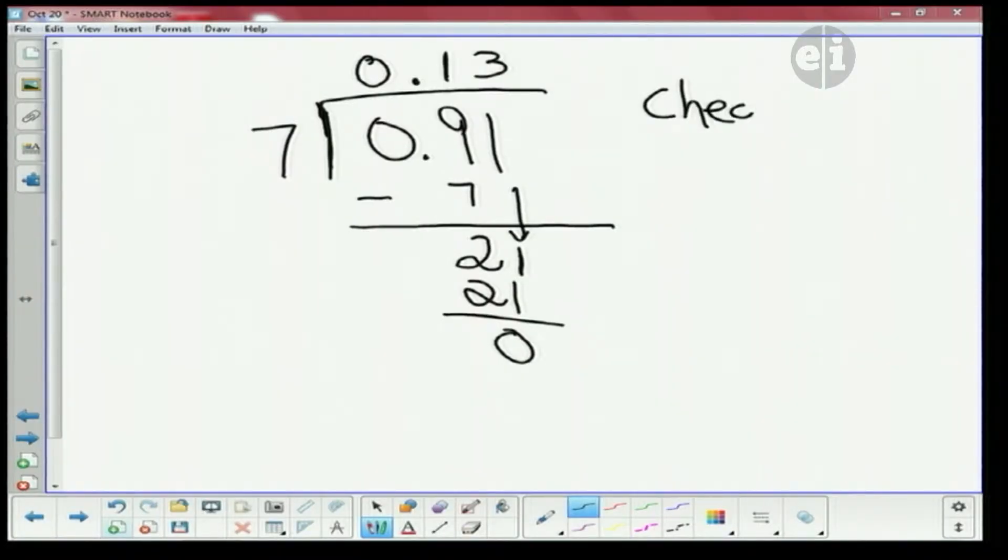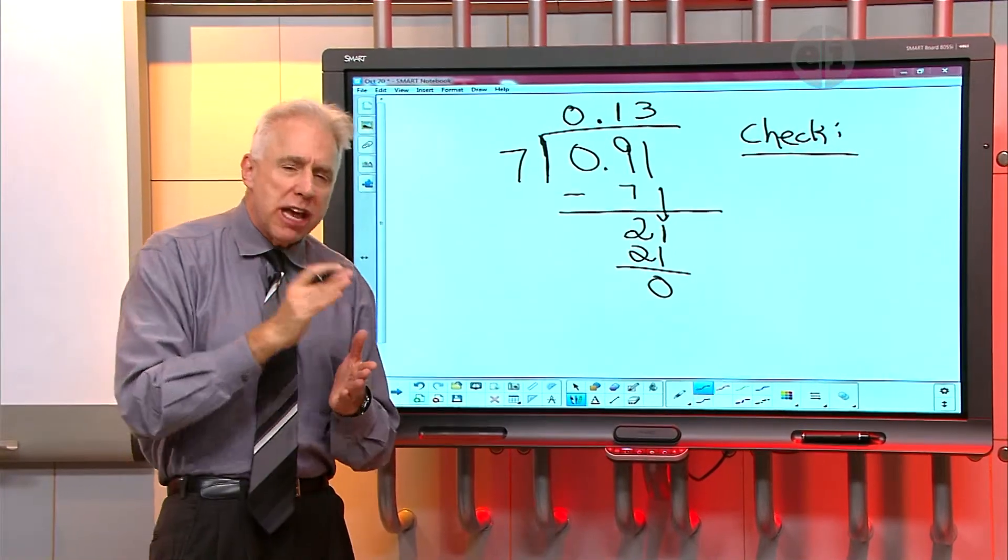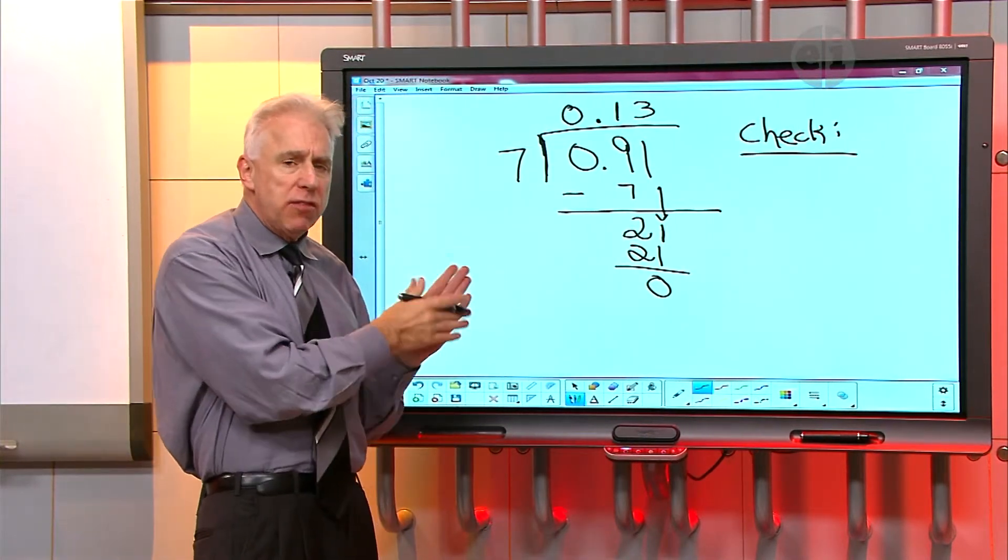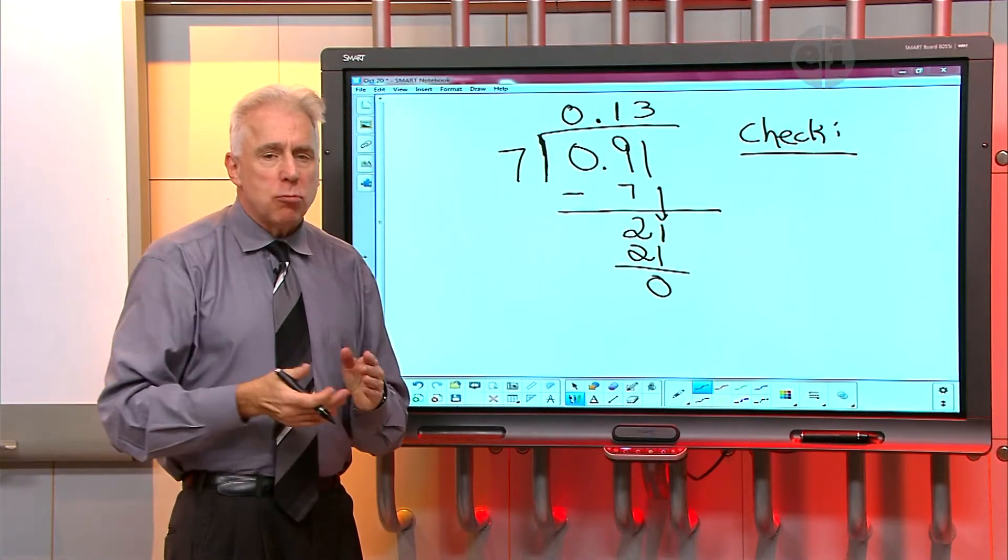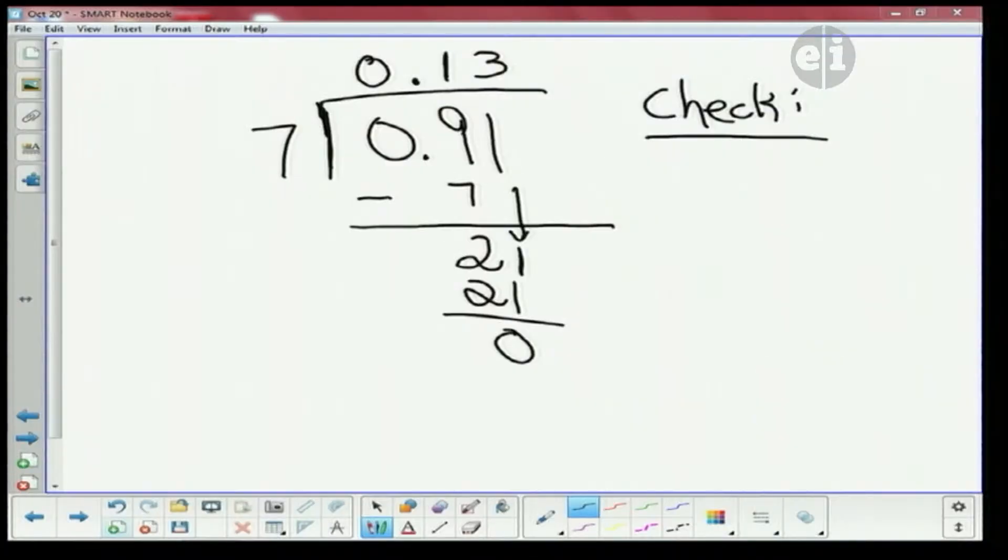I'm not quite sure yet. Okay. Well, quite often, when we're checking these computations, we do the opposite of what we did to accomplish it. This was a division problem, Thomas. What's the opposite of division? Multiplication. So, we would check by taking our answer and multiplying it by the divisor, which was seven.